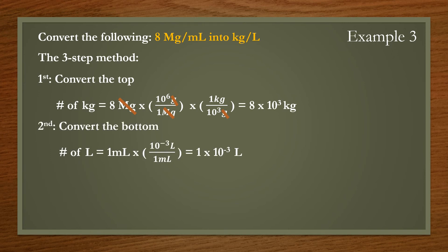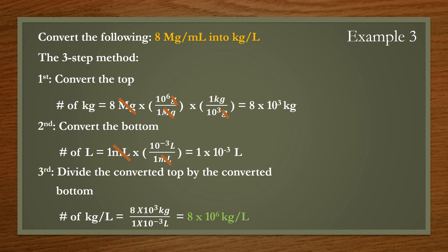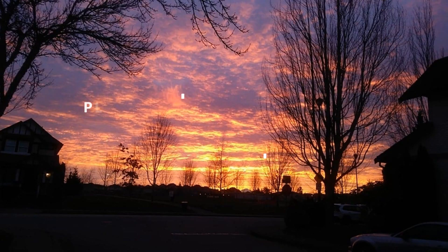Second, convert the bottom from milliliters to liters: multiply 1 milliliter by 10 to the power of negative 3 to give 1 times 10 to the power of negative 3 liters. Now that both are converted, divide the top by the bottom: 8 times 10 to the power of 3 kilograms divided by 1 times 10 to the power of negative 3 liters gives a final answer of 8 times 10 to the power of 6 kilograms per liter.